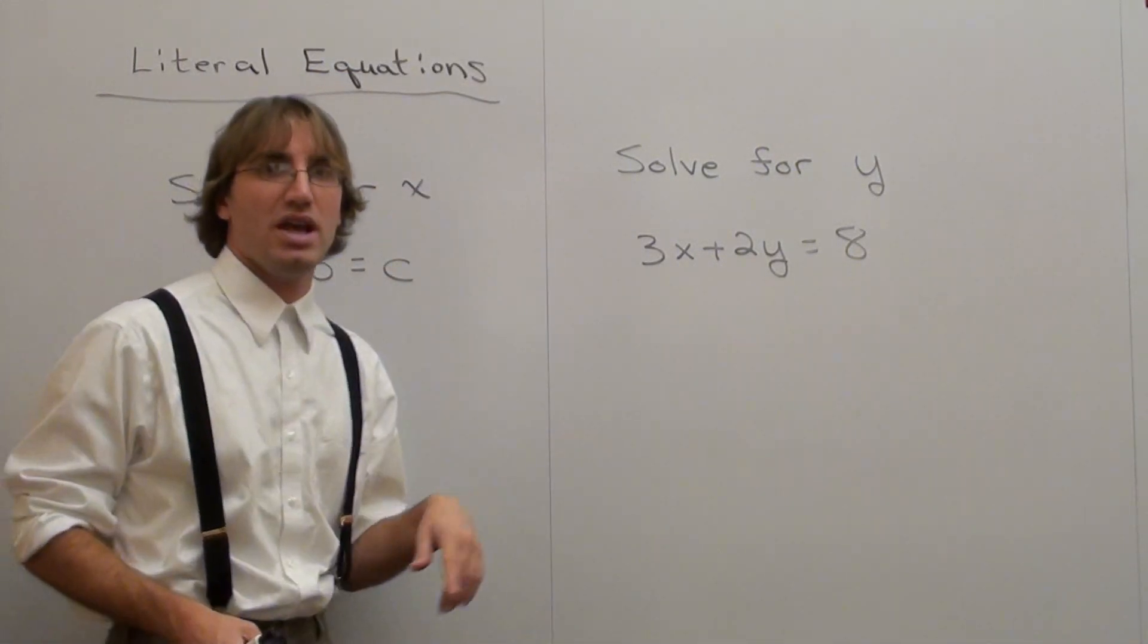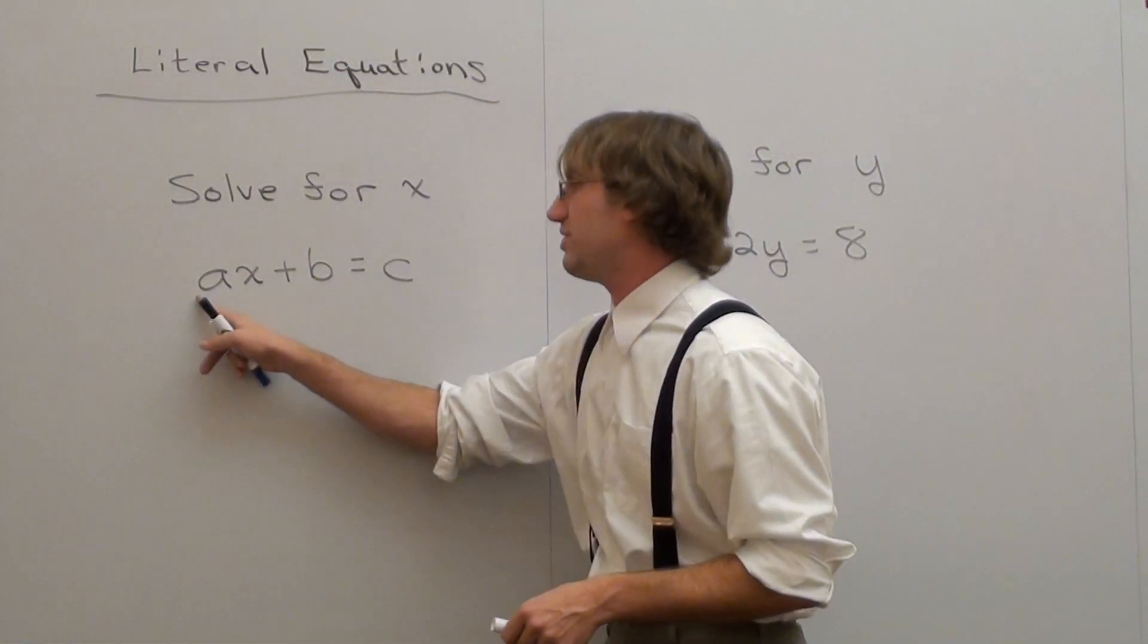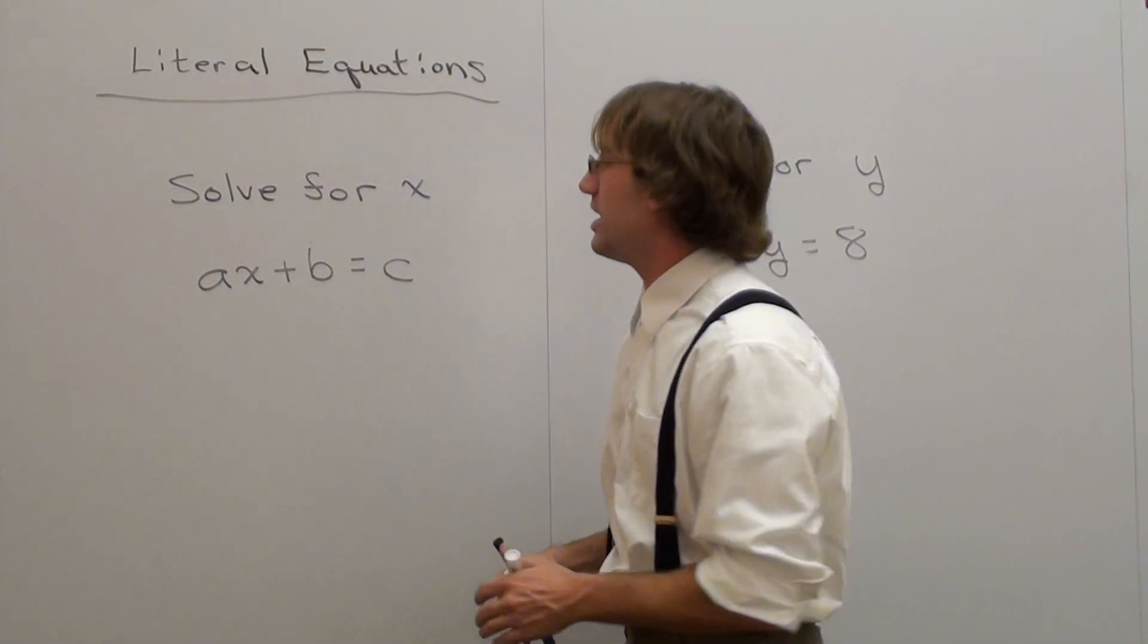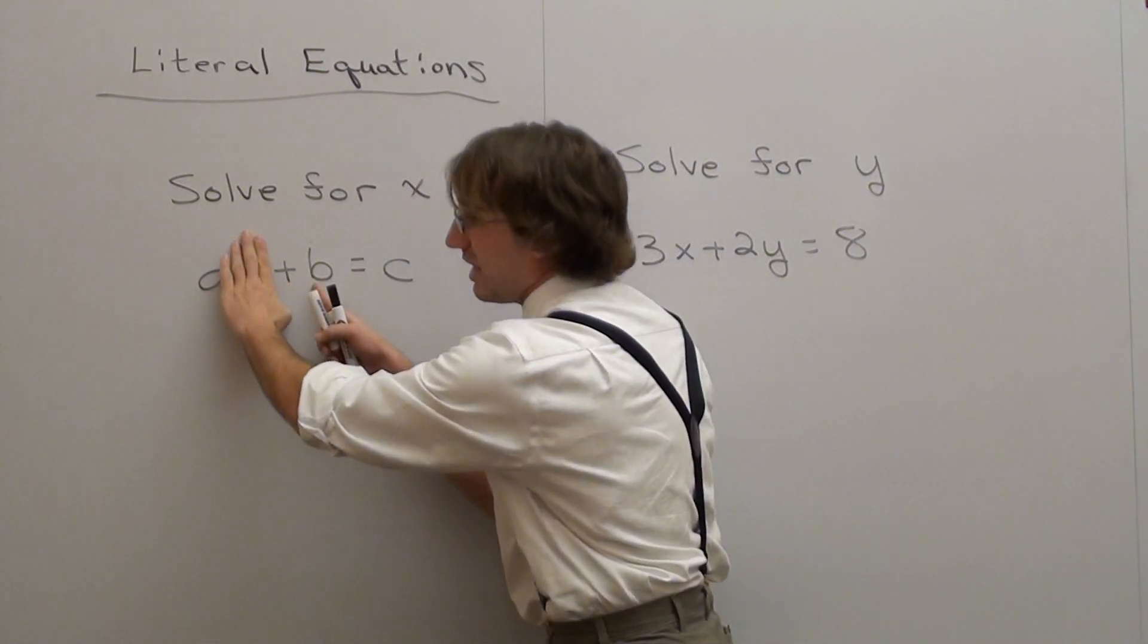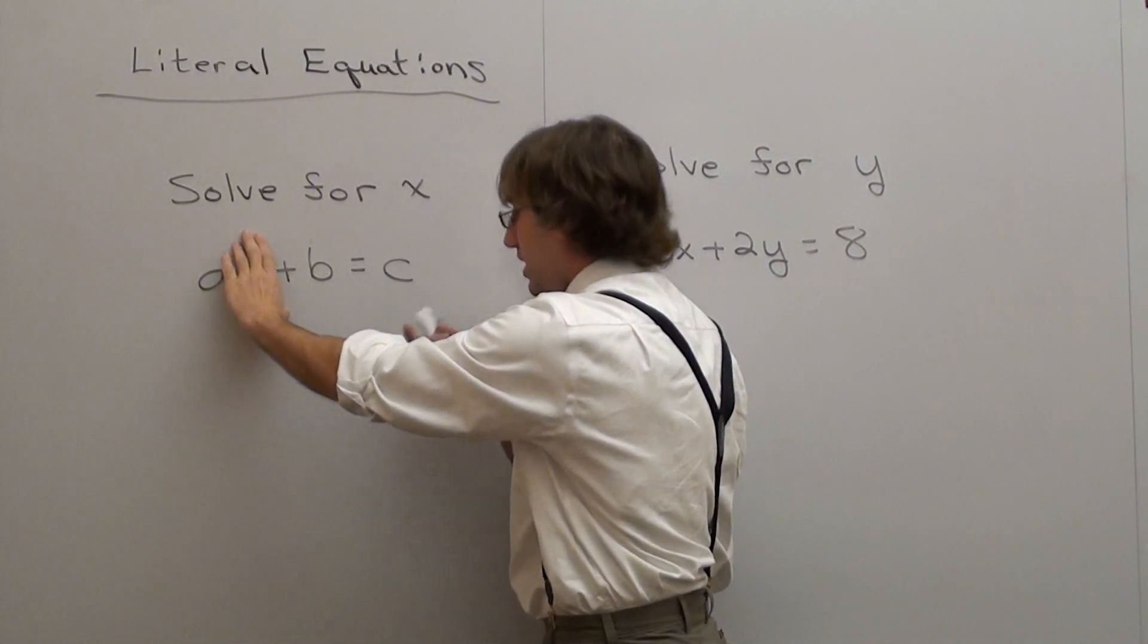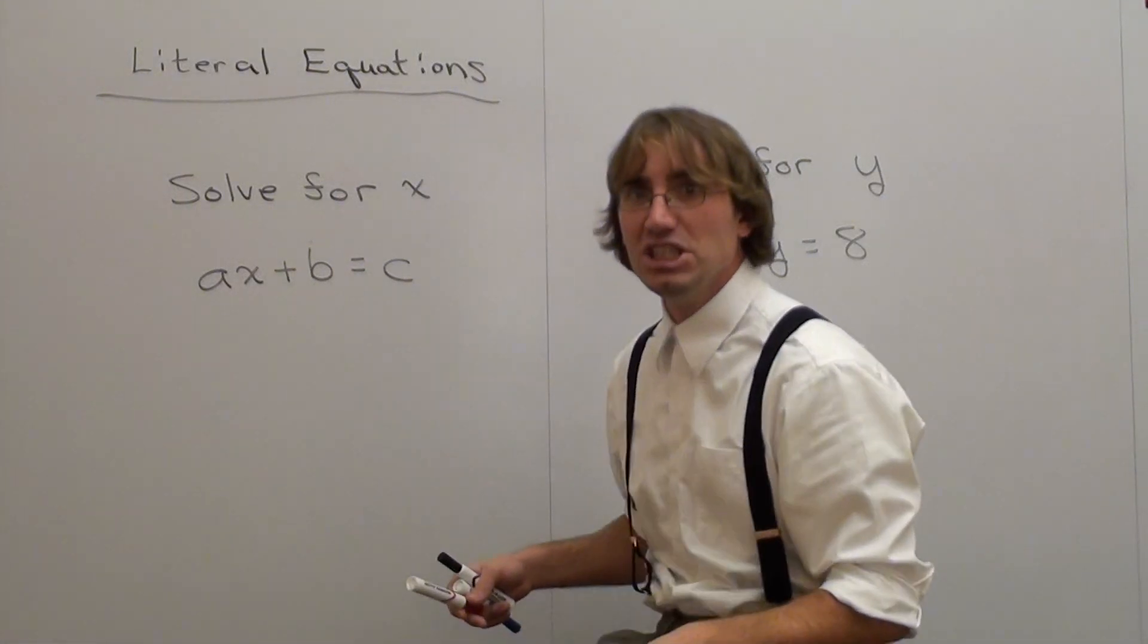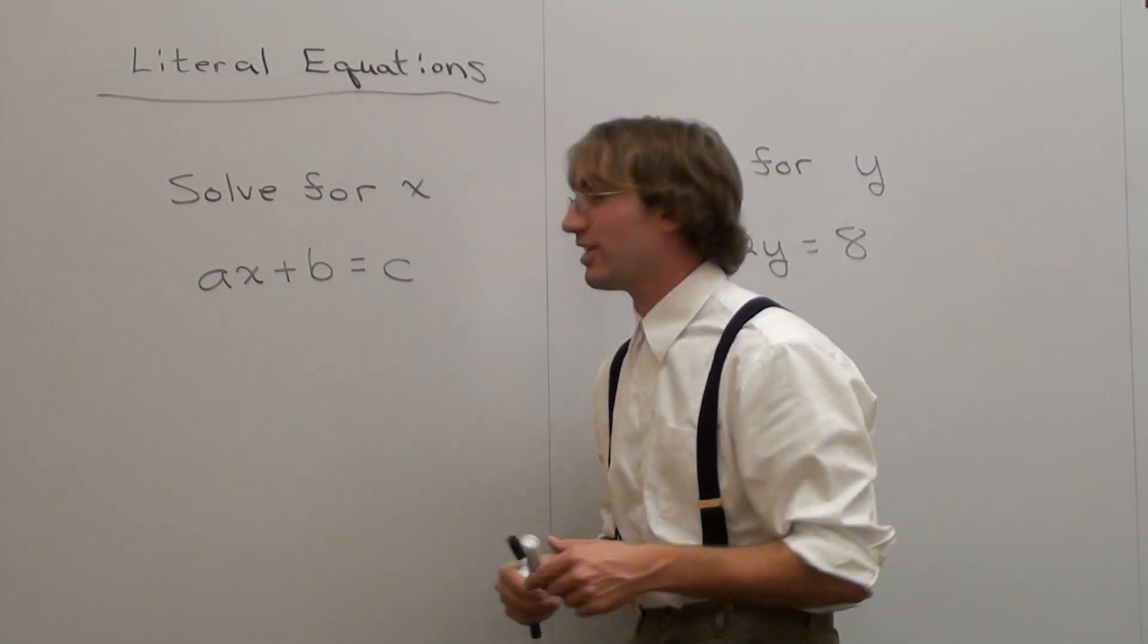And we're going to worry about the a last. Because if we divide by a, we have to divide this by a, this by a, and this by a. We're not going to do that just yet. Instead, what we're going to do is we're going to get rid of this term. Because it's not a like term. It's just going to quietly move it over. Whether or not it wants to move, it's just going to get out of here.